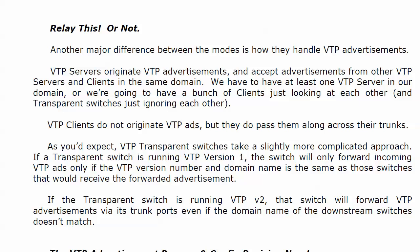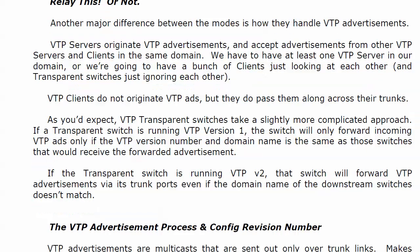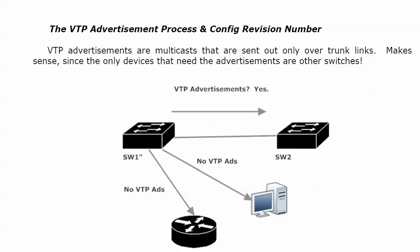What we're coming up on next is the VTP advertisement process and the config revision number. With the advertisement process, we have three different kinds that we're going to look at in the next couple of videos, and we're also going to do a lab with the config revision number because it's a super important value. The VTP advertisements themselves are multicast and are sent out only over trunk links — not thrown out every single port. It makes sense to only send them over trunk links because the only devices that understand a VTP advertisement are other switches.